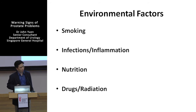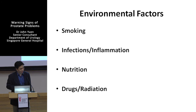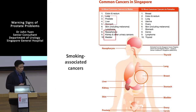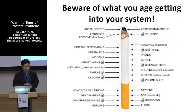There are environmental causes for cancer. The top among these is smoking — it's bad and totally preventable. Infection and inflammation can cause cancer; for example, cervical cancer can happen in young females because of infections. Too little nutrition is no good, and too much is no good — obesity is associated with cancers. Radiation and drugs can also cause cancer. Smoking is associated with 6 out of 10 of the commonest cancers in Singapore, so beware of what you're putting in your system.